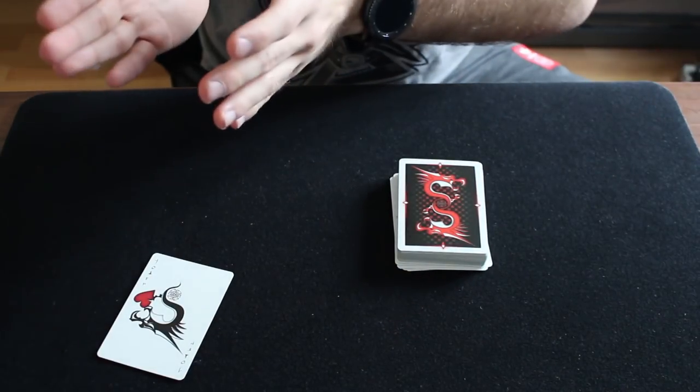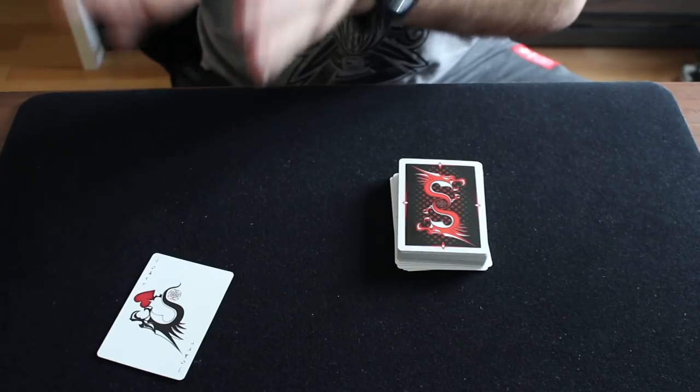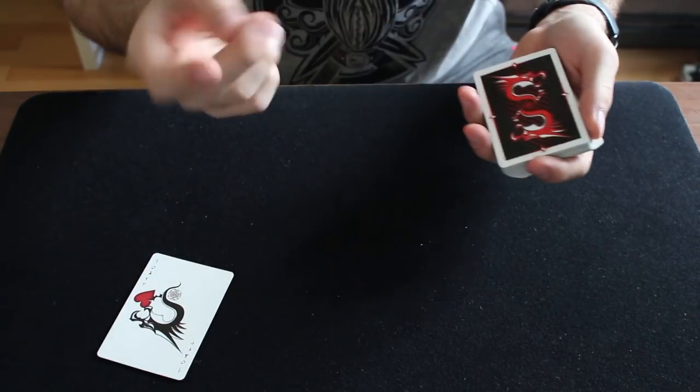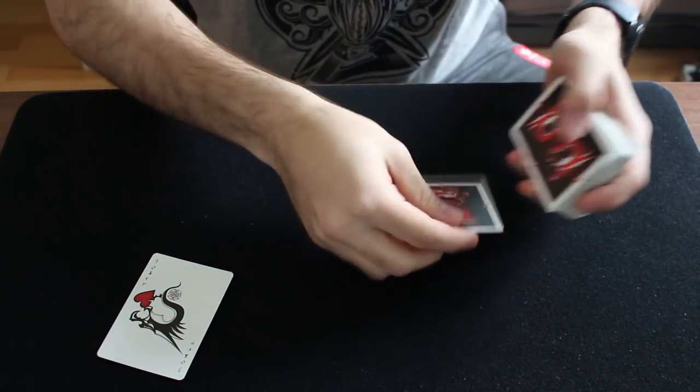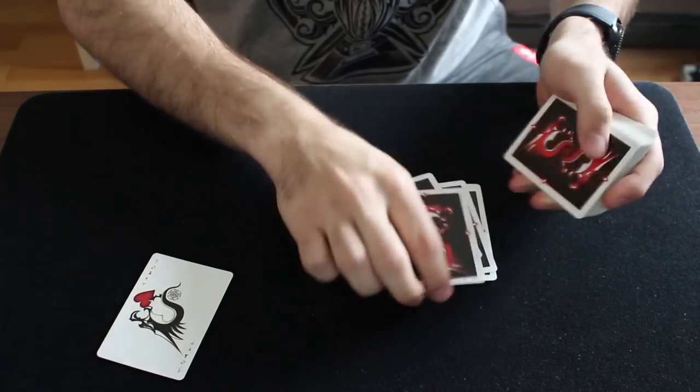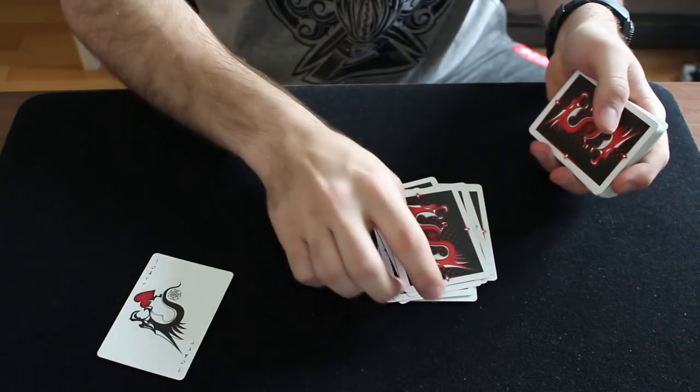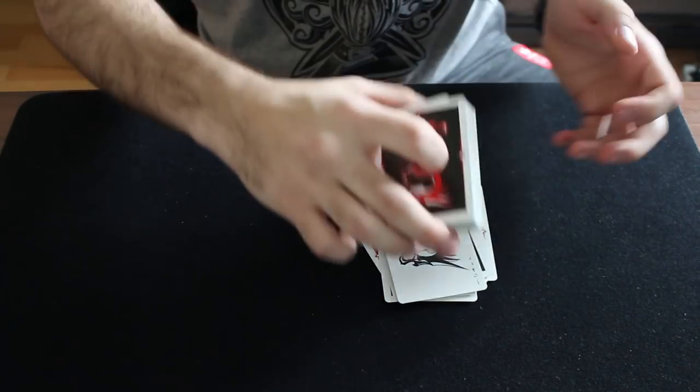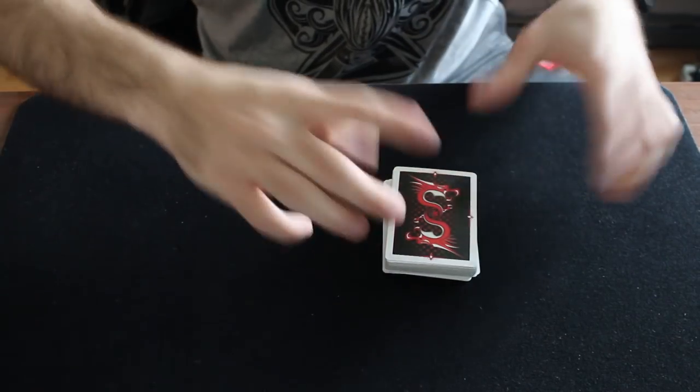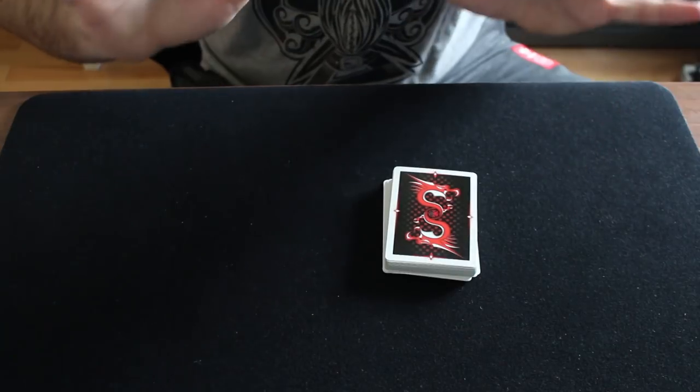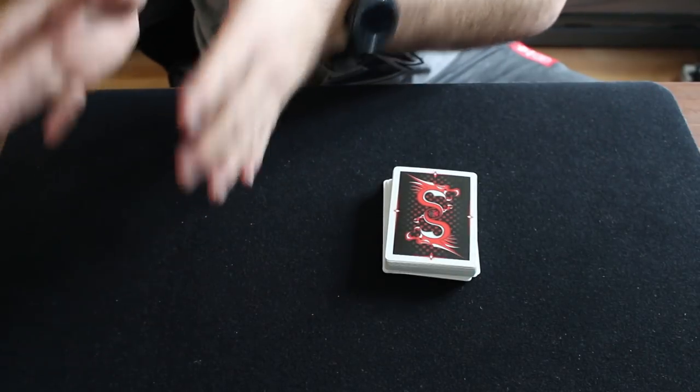That simple. The second spectator is supposed to do the same thing. Take the cards, pick a number. Well, let's say 12: 1, 2, 3, 4, 5, 6, 7, 8, 9, 10, 11, 12. Mark that spot with another joker and place the remaining cards back on top.